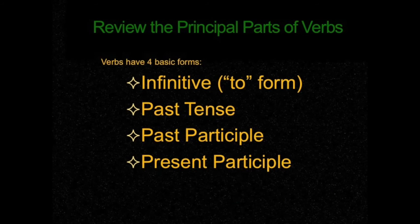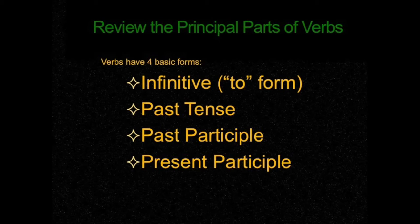As usual, let's have a quick review. These are the principal parts of verbs, which we have been working with over the past several weeks. Remember that verbs have four basic forms. The first is the infinitive form, which is the form that is used with the word "to," such as "to go" or "to write." This form of the verb is used for the present and future tenses.